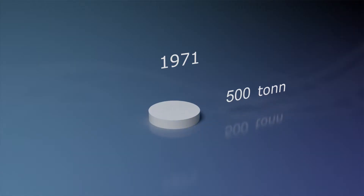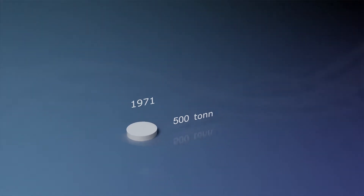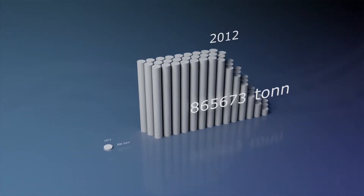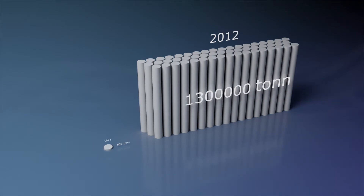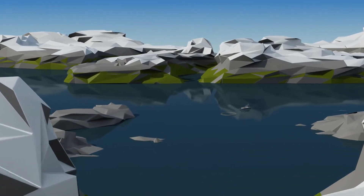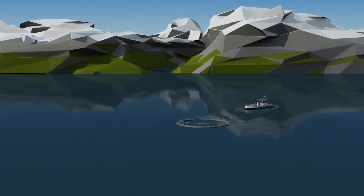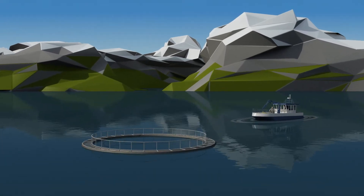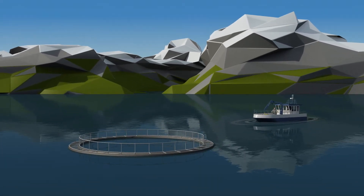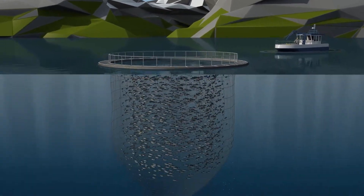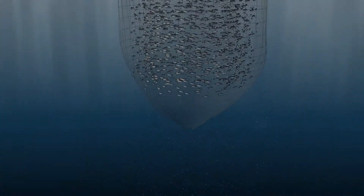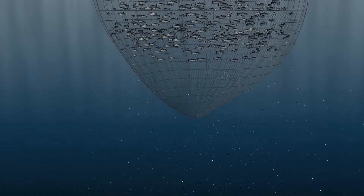Aqua farming has been rapidly expanding since the industry started out in the early 1970s and has grown into becoming Norway's third largest export. The aquaculture industry produces food in a sustainable way. A question which is often asked in regards to increased production volume is whether the release of nutrient salts like nitrogen and phosphorus could have a negative influence on the environment in the form of eutrophication.